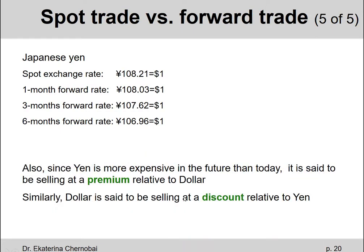Another term that means the same thing is premium versus discount. Since Yen is more expensive in the future than it is today, the Yen is said to be selling at a premium relative to the dollar. Similarly, the dollar is said to be selling at a discount relative to the Yen.